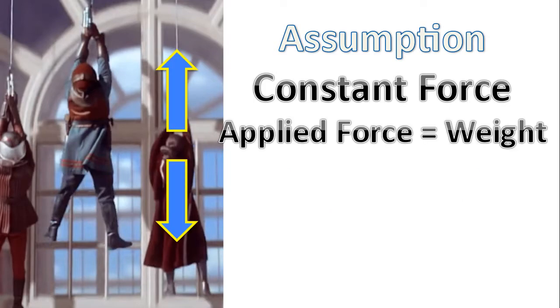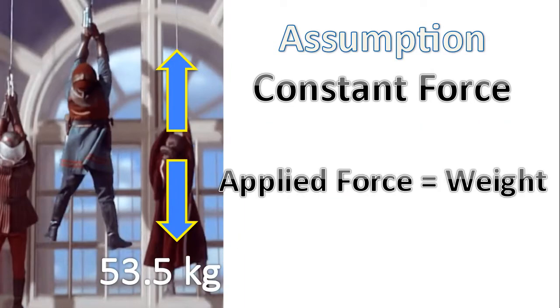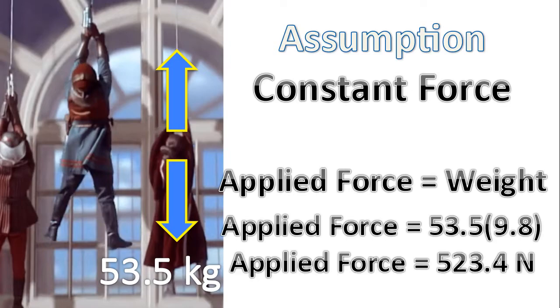And so in this situation we would say the applied force is equal to the weight, or the force of gravity. Now when we're making this, we are assuming that the weight is the only force acting downwards. The reality is there's probably also a force of resistance acting downwards within the device that's lifting them. However, we're going to ignore that force. And so the mass of the actress, according to Google, is that value there. And determining the applied force, we get the value of 523.4 newtons.